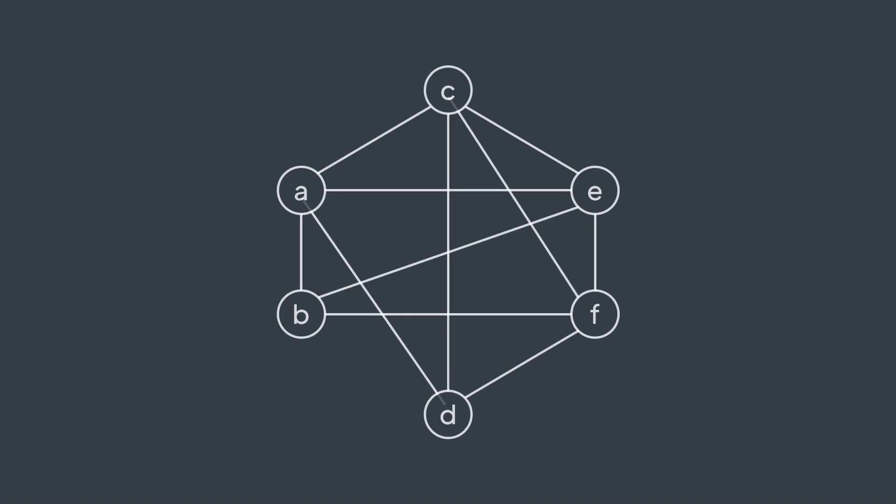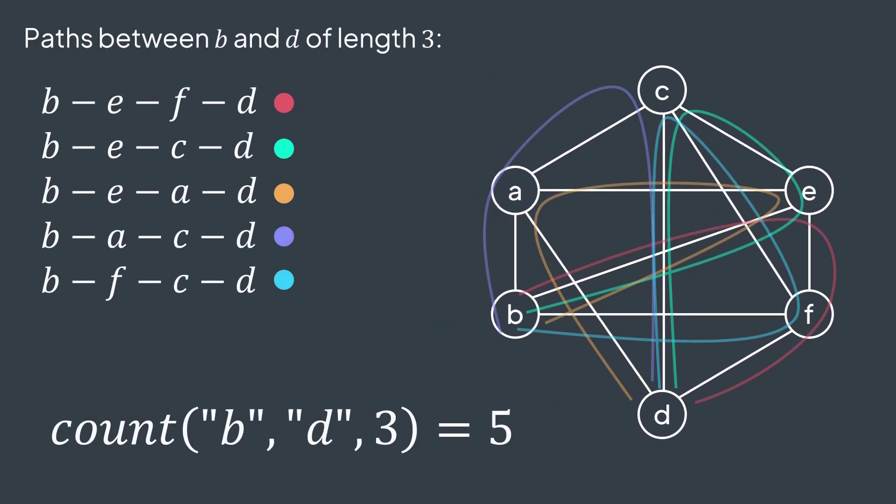Let's say that we have a graph and we want to know the number of paths of length k between two vertices. For example, if we take b and d and k equal to three, we get five. We have five paths of length three between b and d.